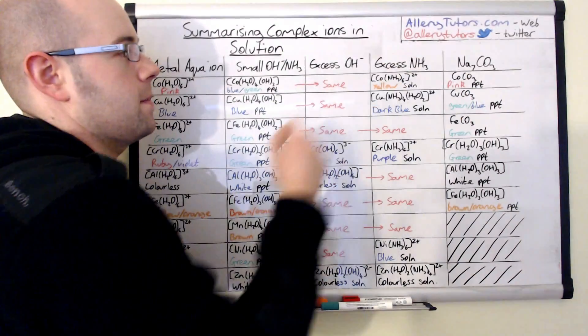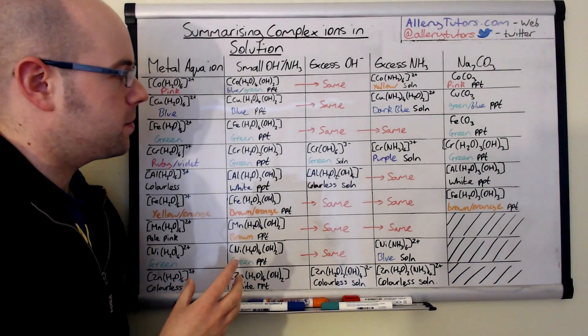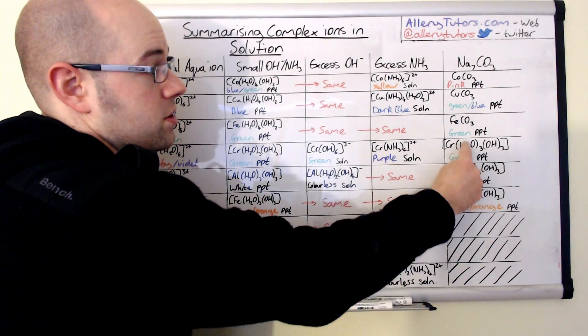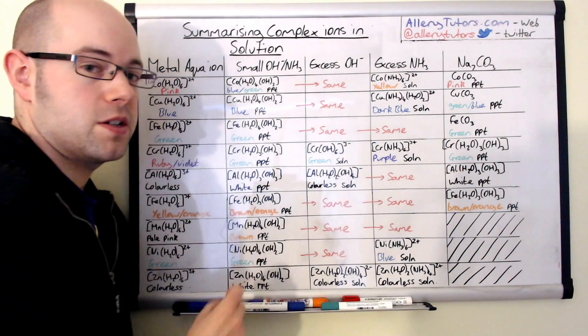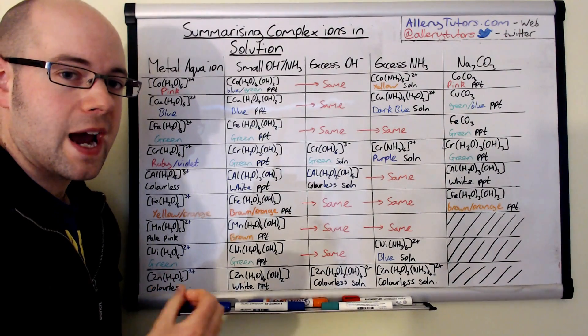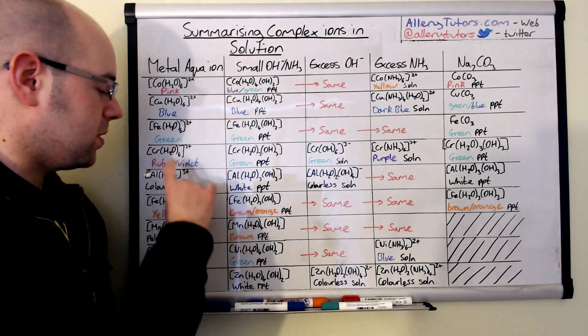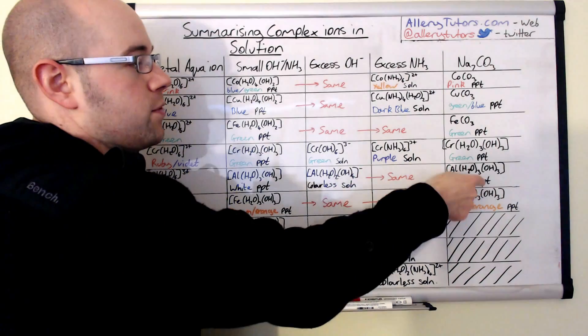With your 3+ ions which are these three here, you see actually the reactions are slightly different when we add the carbonate to them, and that's because the carbonate acts as a base and these 3+ ions are stronger acids.